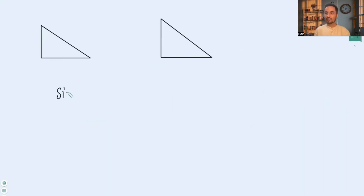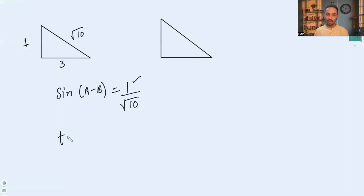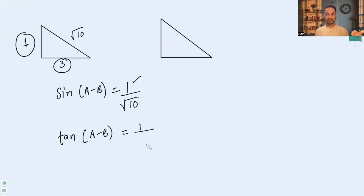We are given sin(a - b) = 1/√10, which means the opposite side is 1 and the hypotenuse is √10. Using Pythagoras, the adjacent side is 3. Therefore tan(a - b) = opposite / adjacent = 1/3.